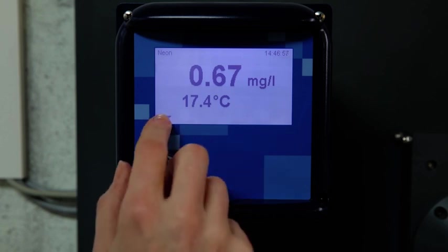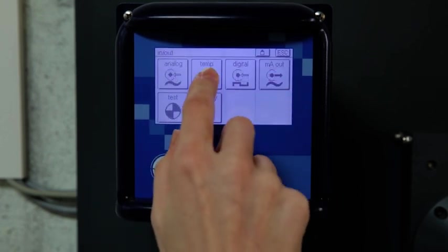If the measured value deviates from the expected value, you can correct the value in the menu.